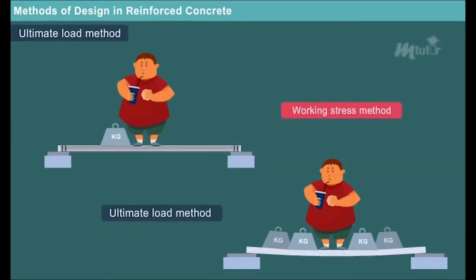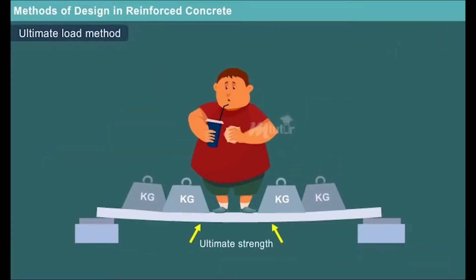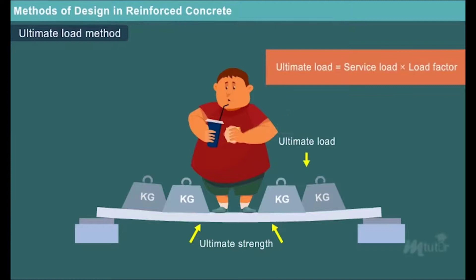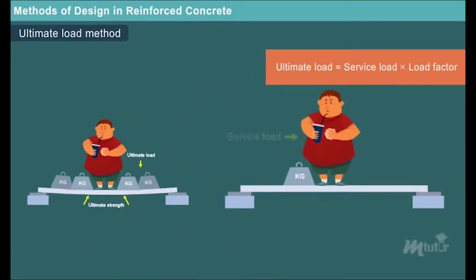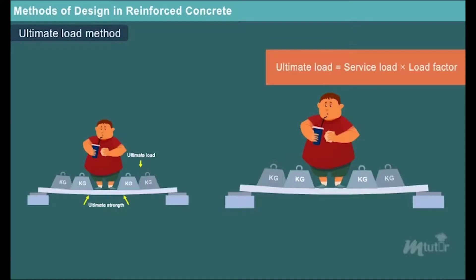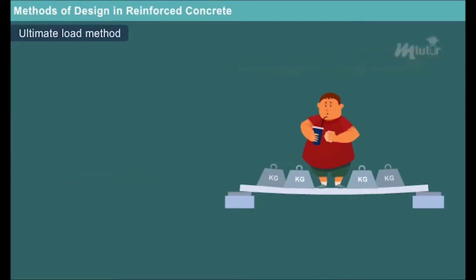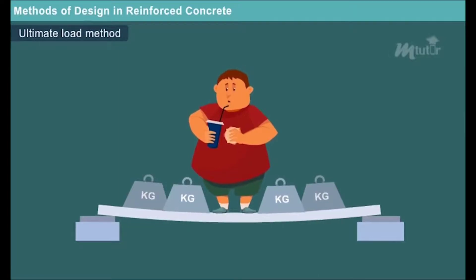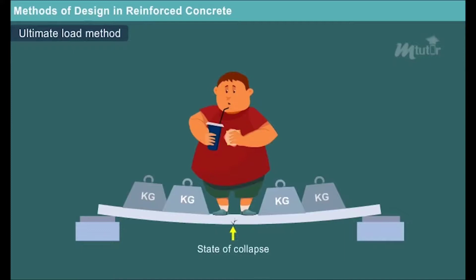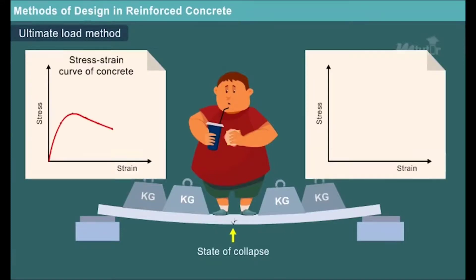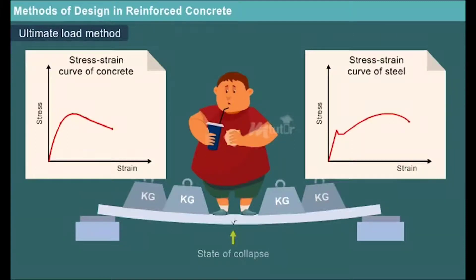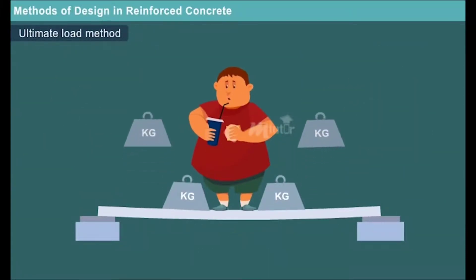Let us move on to the next method — the ultimate load method. This method was developed to overcome the discrepancies in working stress method. It is based on the ultimate strength of reinforced concrete. At ultimate load, which is obtained by enhancing the service load by a load factor so as to obtain the desired margin of safety, the stress condition of a structure is analyzed during the state of collapse using a non-linear stress-strain curve of steel and concrete. The safety of the design is ensured by the proper use of load factors.